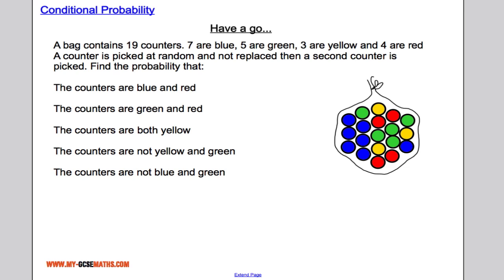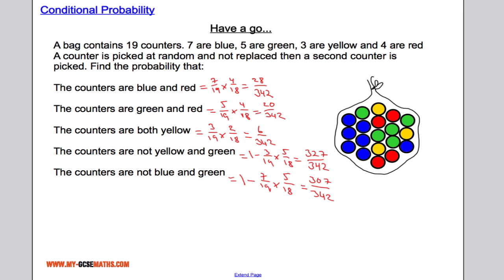Here are a few questions for you to have a go at — pause the video now and see how you get on. The solutions are: 28 out of 342, 20 out of 342, 6 out of 342, 327 out of 342, and 307 out of 342. That's it for conditional probability — hopefully you found the video useful. Best of luck with the revision!